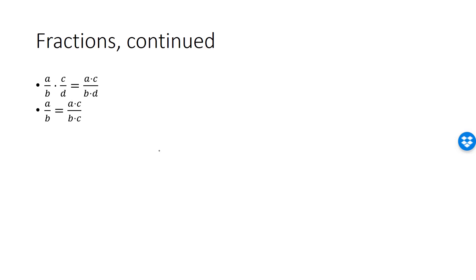Our next rule tells us that in a fraction A divided by B, we can multiply both numerator and denominator by a real number C, as long as C is not 0. This is very useful if we want to rewrite a fraction with a specific value for the denominator. This rule is also often used from right to left, in which case we say that we cancel C. The proof follows from the previous rule and the fact that C divided by C is equal to 1.